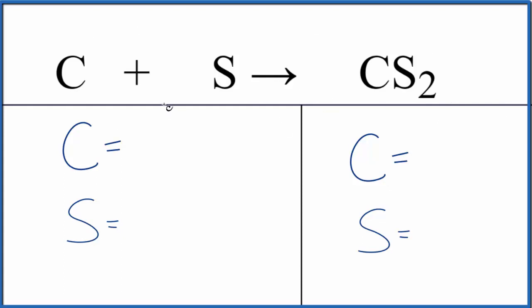So let's count the atoms and then balance the equation. For the carbon, it's not written, but we have a one there. Same for the sulfur. So one carbon, one sulfur. For the carbon disulfide, we have the one carbon and two sulfur atoms.